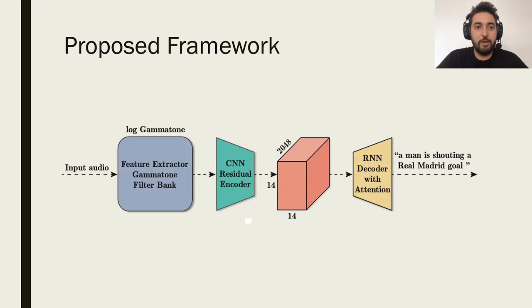The system implemented for solving this task is the one shown here. Firstly, a temporal frequency representation of the audio is calculated. Concretely, gammatone filter banks are used for this purpose. After that, the representations are encoded by different residual convolutional neural networks architectures. The encoded output is decoded with a recurrent neural network with an attention mechanism. The result of this framework is the caption generated for the input audio. Each of these modules are described in detail in the following slides.